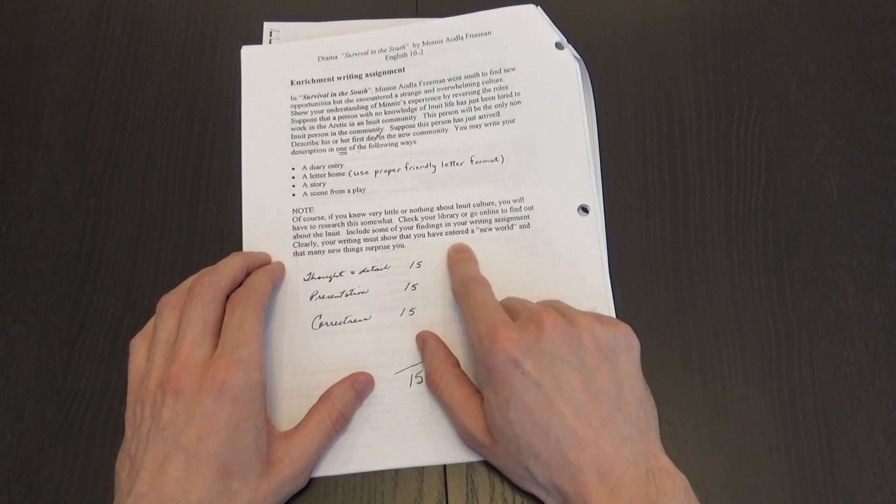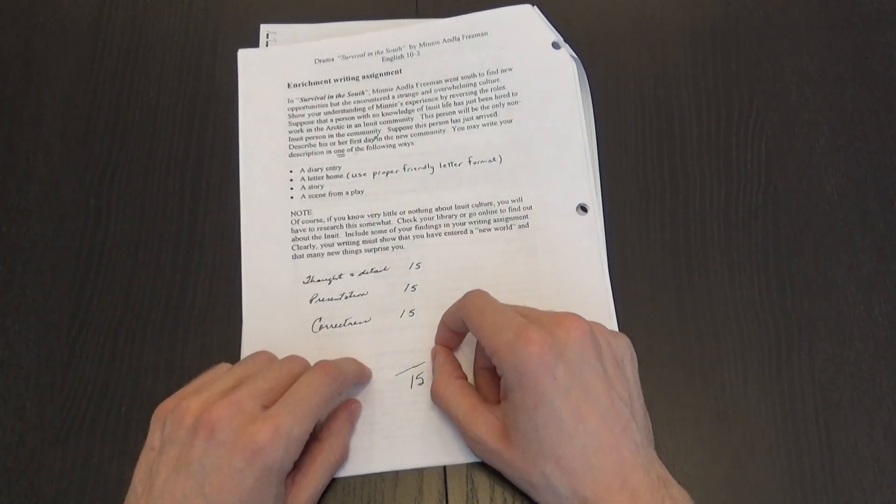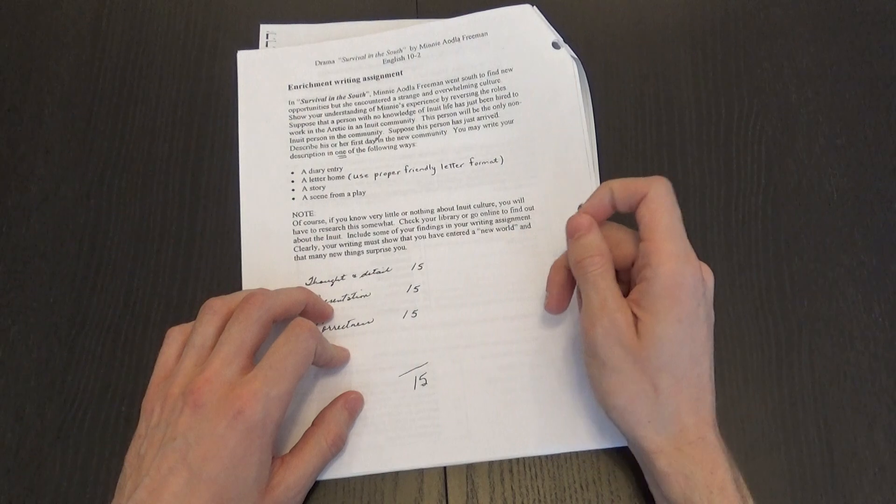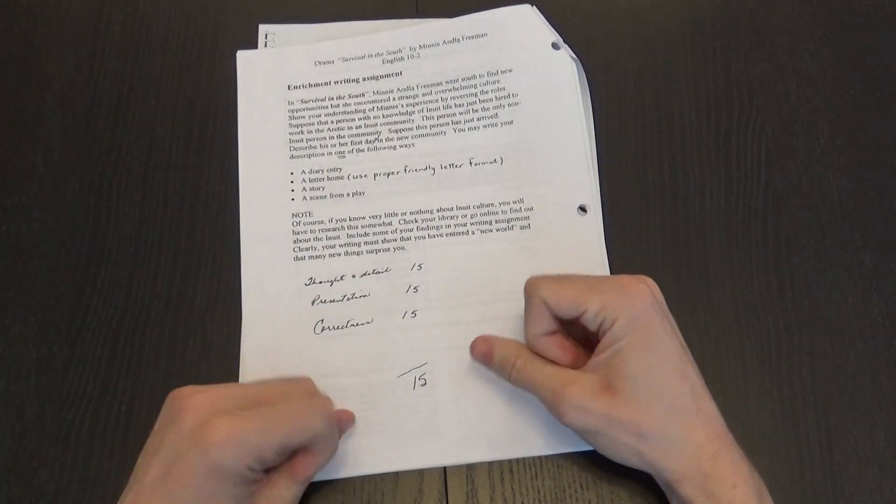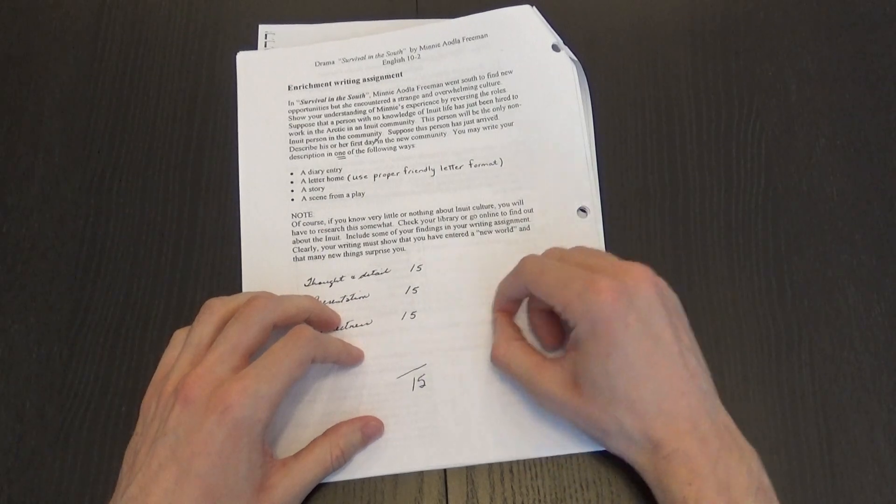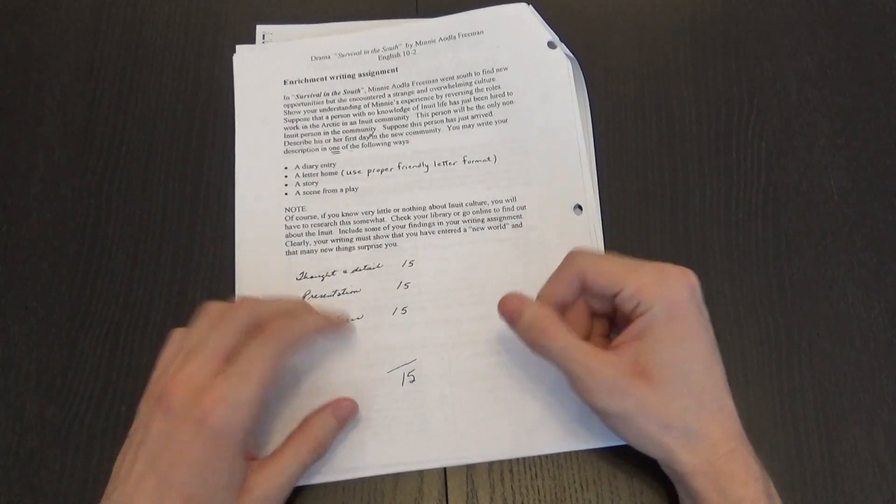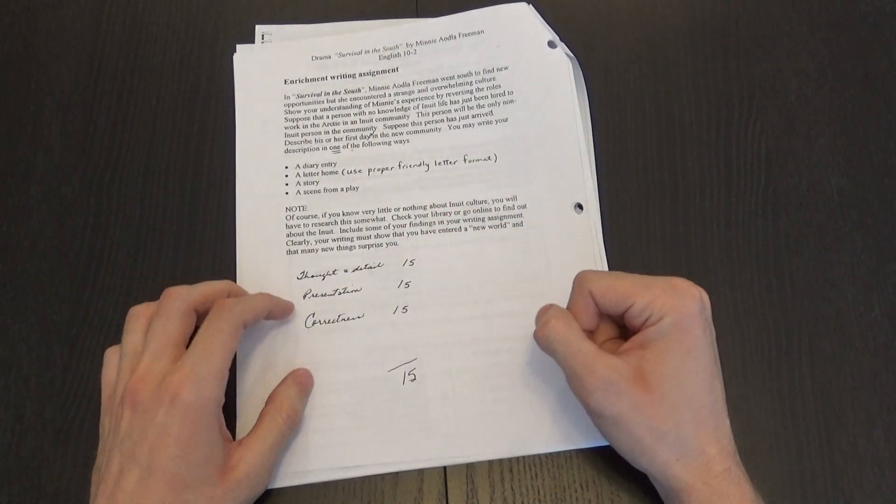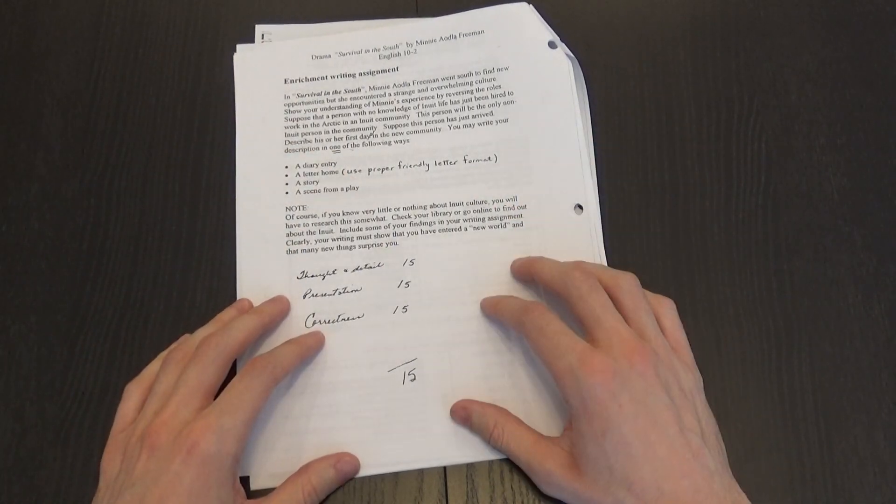Clearly your writing must show that you have entered a new world and that many things surprise you. So if you just write like, today I saw a seal outside my house, well that's not very exciting, we don't feel the excitement. So you can be like, wow you'll never believe what I just saw today, like a seal just walked right in front of me. So try to put some excitement in your text, no matter which one you picked.